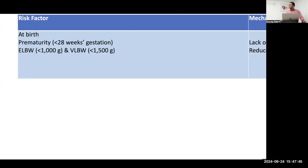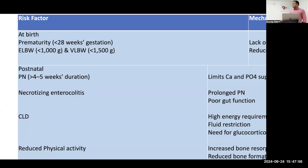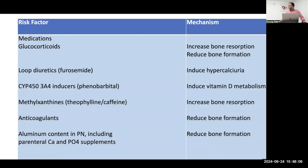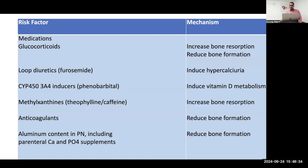Briefly discussing risk factors: at birth, prematurity, extreme low birth weight, or very low birth weight are key factors. Postnatally, prolonged parenteral nutrition for more than five weeks, GI pathology like necrotizing enterocolitis, CLD, or reduced physical activity increase risk. Medications such as glucocorticoids reduce bone formation and increase bone resorption; loop diuretics cause hypercalciuria; antiepileptic drugs like phenobarbital increase vitamin D metabolism; methylxanthines like caffeine increase bone resorption; anticoagulants and aluminum in parenteral nutrition reduce bone formation.